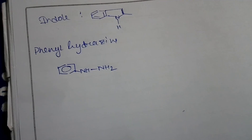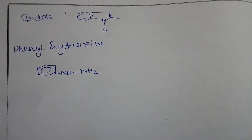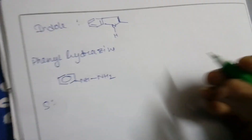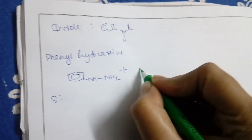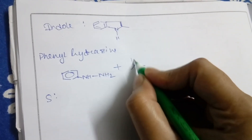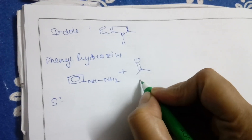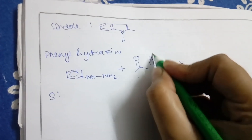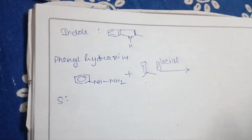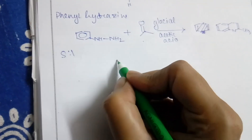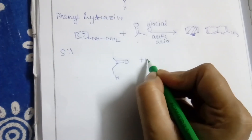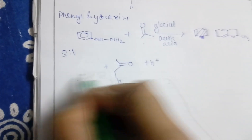Now we will start the mechanism. Step 1: the reaction materials are phenylhydrazine as the main starting material, then acetone as a carbonyl compound having alpha hydrogen, and to make the medium acidic we will use glacial acetic acid, which is a strong acid. So in our medium, carbonyl compound, alpha hydrogen, and phenylhydrazine are all present.